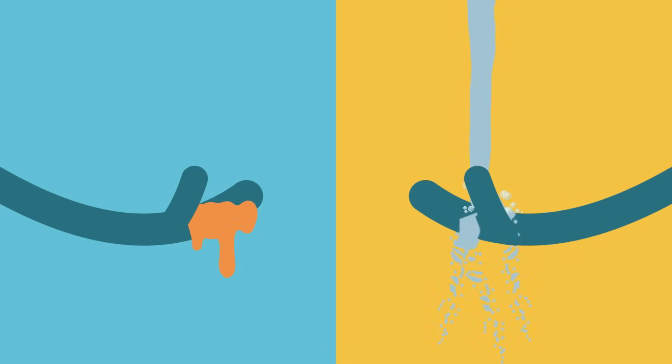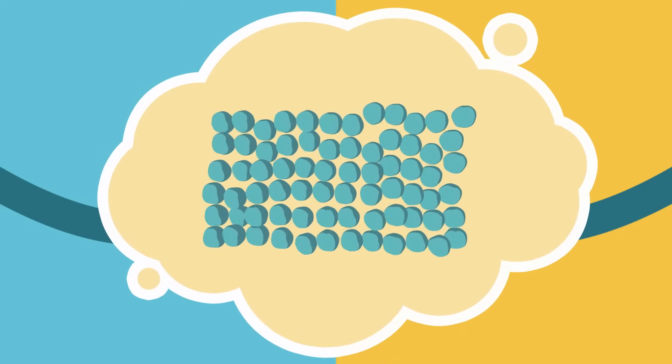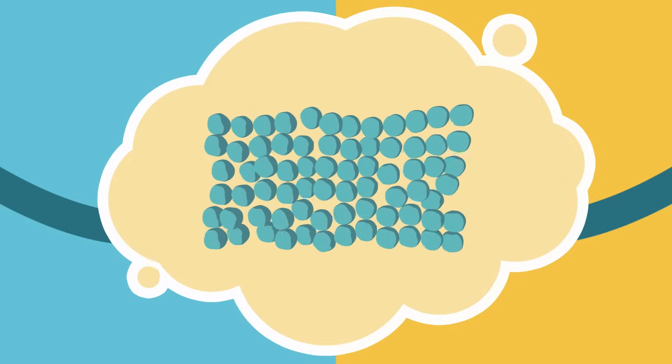Liquids are sometimes thick like honey or thin like water, but no matter what they'll always flow. Atoms in a liquid can move around, but they'll stay together.